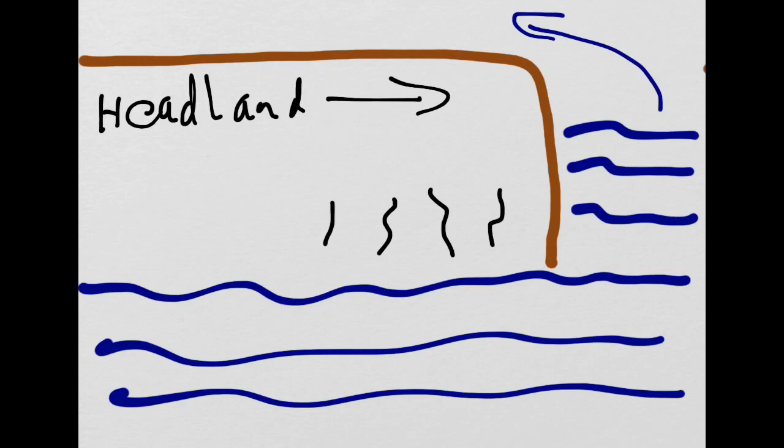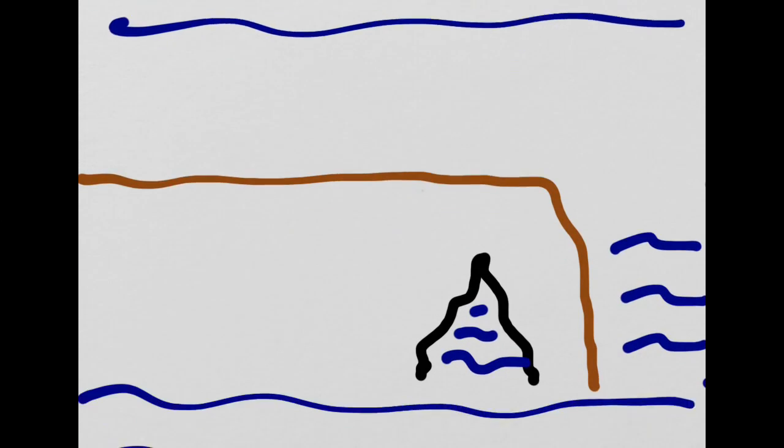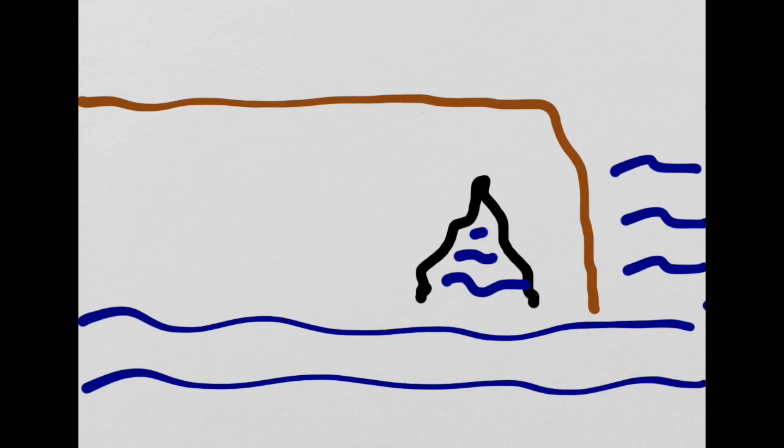Some of these cracks may join together and this would lead to the formation of a cave. In this example the cave is only on one side of the headland. However if there was a second cave on the other side of the headland, if those two caves join together then they would develop into an arch which we can see in this diagram here.